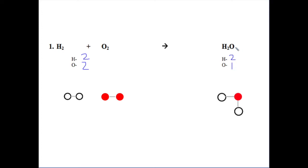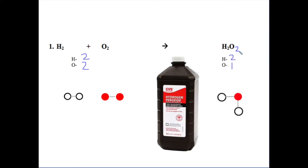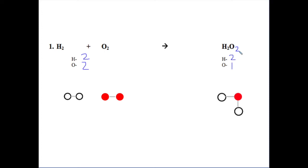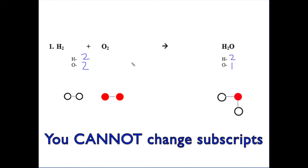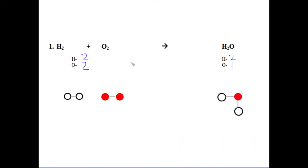It is tempting to just put a subscript of two right here, but H2O2 is a different molecule — it is not water, it is hydrogen peroxide. You would not drink it. You cannot add a subscript there. You may want to remove the subscript from the oxygen on the reactants side, but you do not find oxygen by itself in nature — it's a diatomic molecule that bonds to other oxygens. You are not allowed to change any subscripts because that will change the molecule. The equation is not balanced because the number of reactants does not equal the number of products.